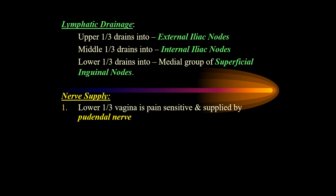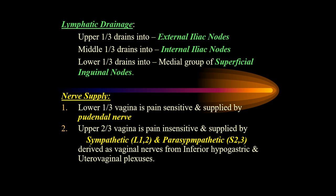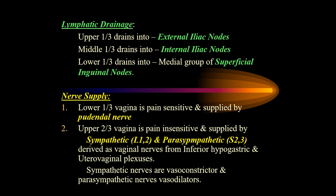The nerve supply: the lower one-third of the vagina is pain-sensitive, being close to the skin and perineum, and is supplied by the pudendal nerve. The upper two-thirds are pain-insensitive and are supplied by the autonomic nervous system — sympathetic from L1 and L2, and parasympathetic from S2 and S3 (note: unlike the uterus and fallopian tubes, S4 is not involved here). These are derived as vaginal nerves from the inferior hypogastric and uterovaginal plexus. Sympathetic nerves are vasoconstrictors; parasympathetic nerves are vasodilators.